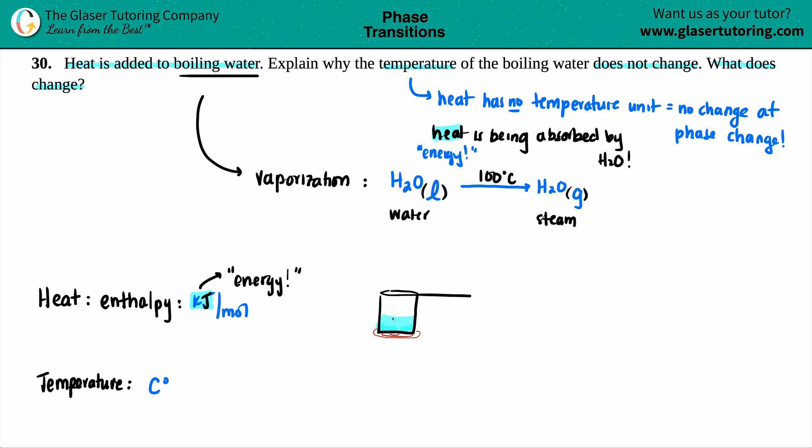And that's why the gases can escape, because the kinetic energy is increasing in the molecules, more movement, and that allows the water molecules to turn to steam and come out of the water.